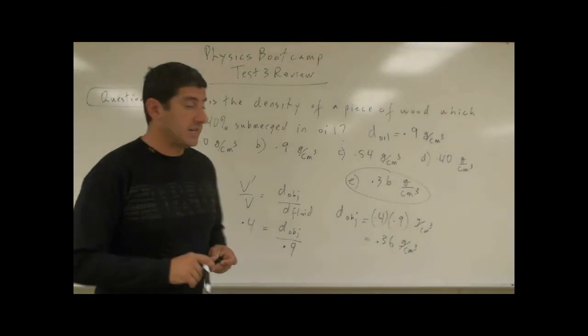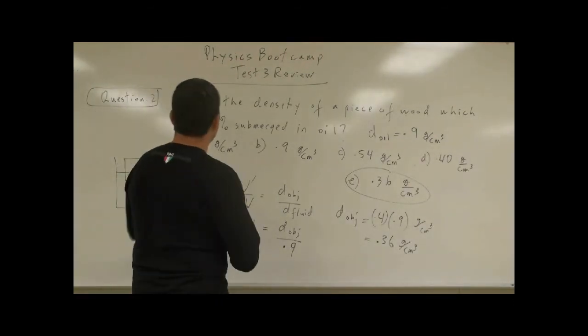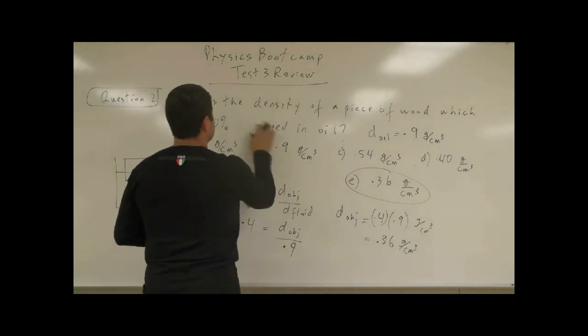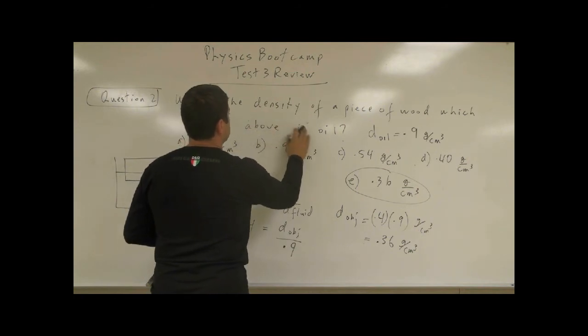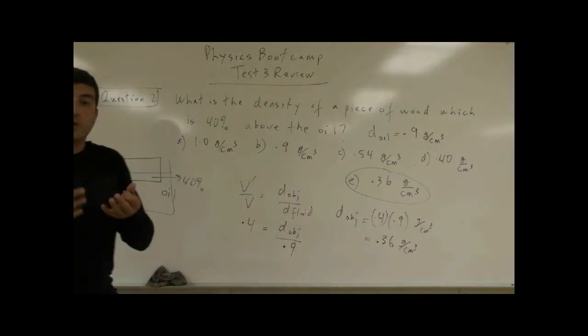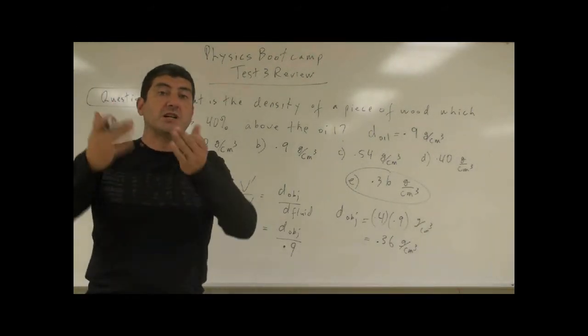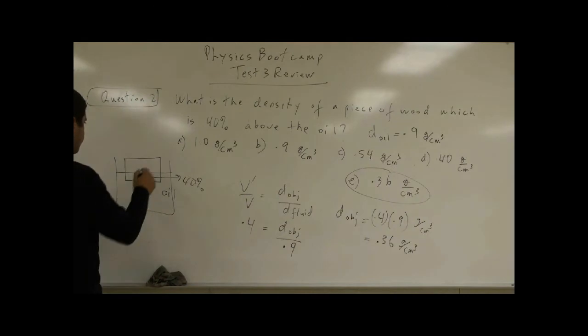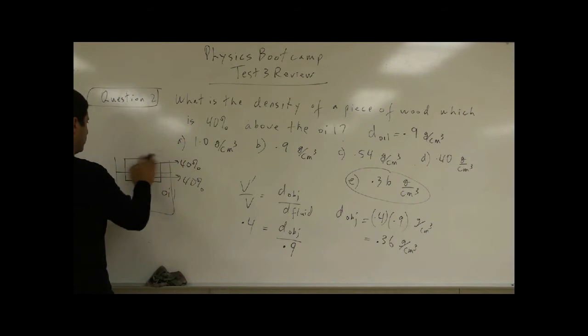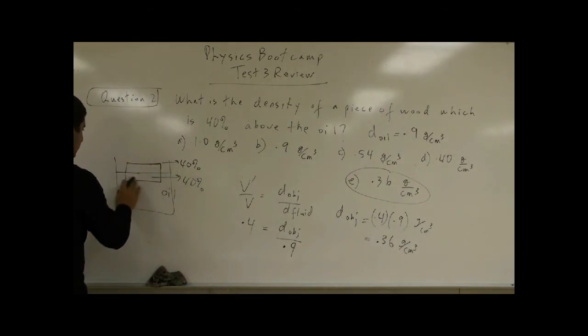What if the problem had said this? What is the density of a piece of wood which is 40% above the oil? If 40% of it is floating above the oil, so what would happen? Then this would be 40%, right? So it would look a little different. 40% of the wood would be above. What portion of the wood would be below?